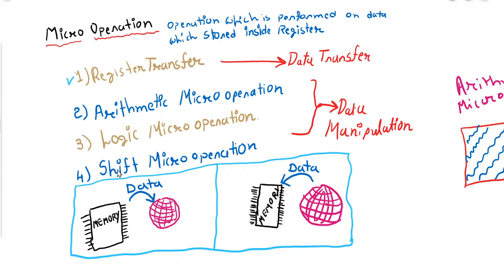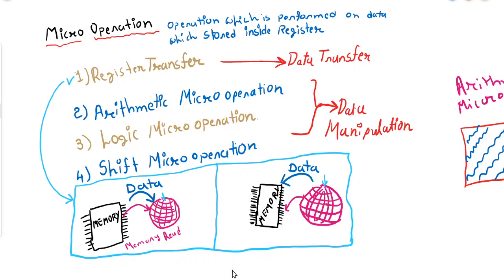Next is Logic Micro operation, and then there is Shift Micro operation. If we consider Register Transfer, we have two options: either we transfer data into the register, or we transfer data from the register. Transferring data from memory to the outside world is called memory read, and transferring data from the outside world to memory is called memory write.